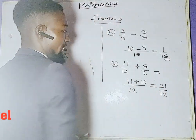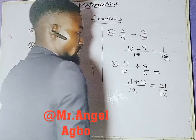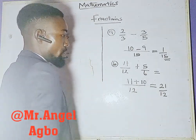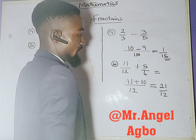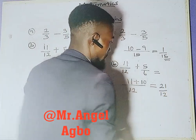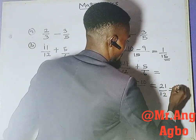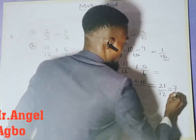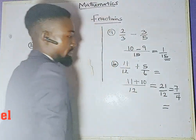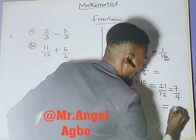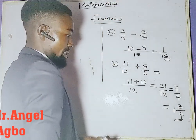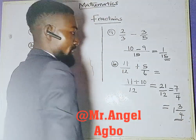We look for a number that can divide both the numerator and denominator to reduce this fraction. 3 can go into 21 and also into 12. 21 divided by 3 gives us 7, and 12 divided by 3 gives us 4. So the result is 7 over 4, which as a mixed number is 1 and 3 quarters — because 4 times 1 is 4, plus 3 is 7.